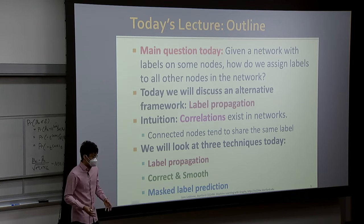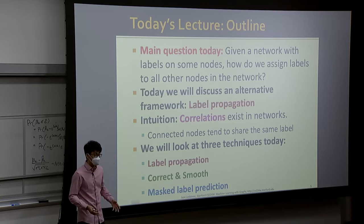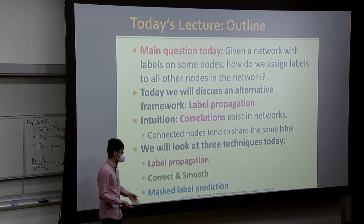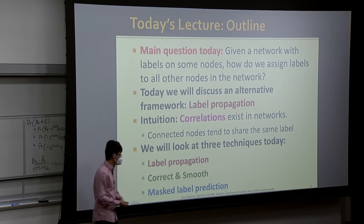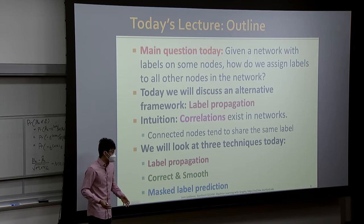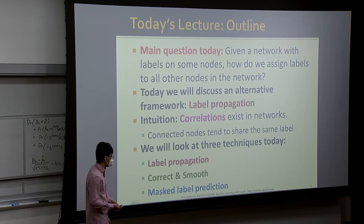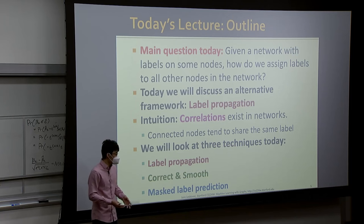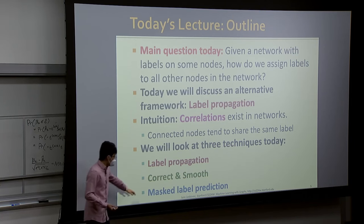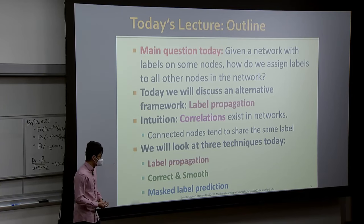To solve this problem based on this intuition, we'll introduce three different techniques. The first is label propagation — the basics of this idea, which you'll likely encounter in the homework. The second is called Correct and Smooth, the current state-of-the-art method dominating many benchmarks, which combines label propagation and graph neural networks. Lastly, we'll talk about Masked Label Prediction — new content this year — which is super simple to implement and may be useful for your course project.